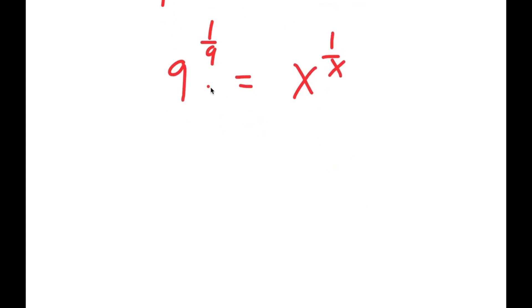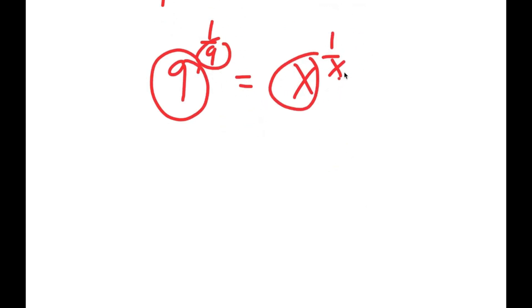Notice this is in the form: a number to the power of 1 over that same number equals x to the power of 1 over x, meaning x equals that number, which is 9.